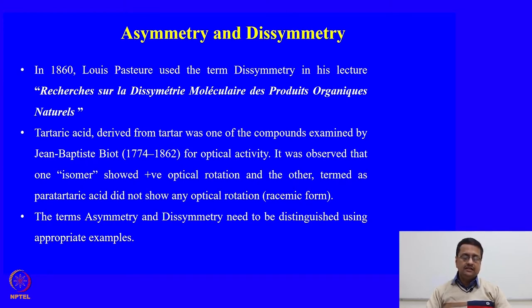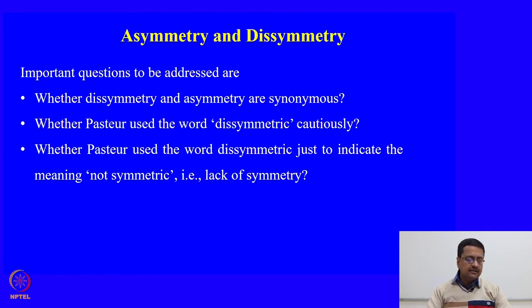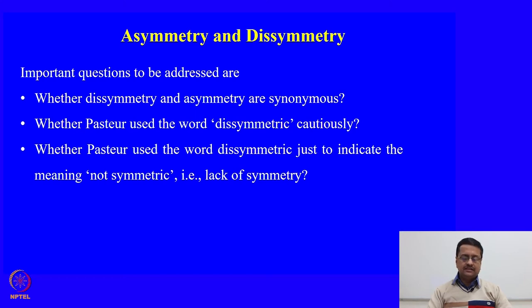The terms asymmetry and disymmetry need to be distinguished using appropriate examples. In this class today, we will discuss about asymmetry and disymmetry and address three important questions: first, whether disymmetry and asymmetry are synonyms; second, whether Pasteur used the word disymmetric cautiously; and third, whether Pasteur used the word disymmetric just to indicate the meaning 'not symmetric,' that is, the lack of symmetry.